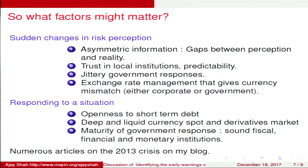Once a currency crisis begins, two key factors govern the response: openness to short-term debt — which allows the I minus S gap to be filled without a large interest rate change — and deep, liquid currency markets as shock absorbers. The maturity of government response also matters: good institutions produce less jittery responses and smaller crises. Ajay Shah recommends studying the 2013 crisis, which is the best-studied crisis in India's history, with better financial markets data and high-quality research and commentary available on his blog.